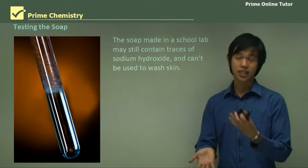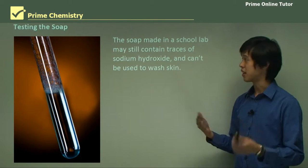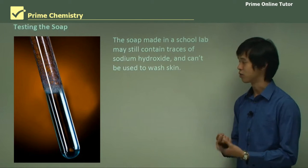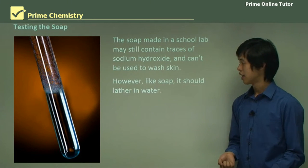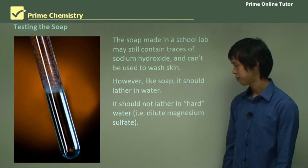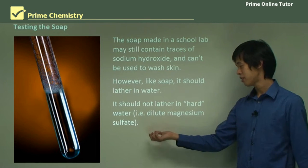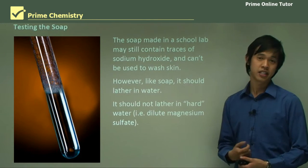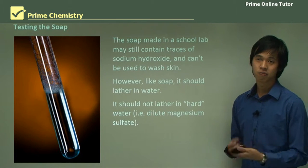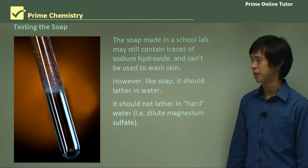Once you've made the soap, we can test it. The soap made in school will still have traces of sodium hydroxide, so we can't use it to wash our skin because it will dry it out. However, it should lather in water — making bubbles and foam — and that's how we test it. It won't lather in hard water, such as a dilute solution of magnesium sulfate, but it should lather in distilled water. And there you see a little bit of lathering from the soap.